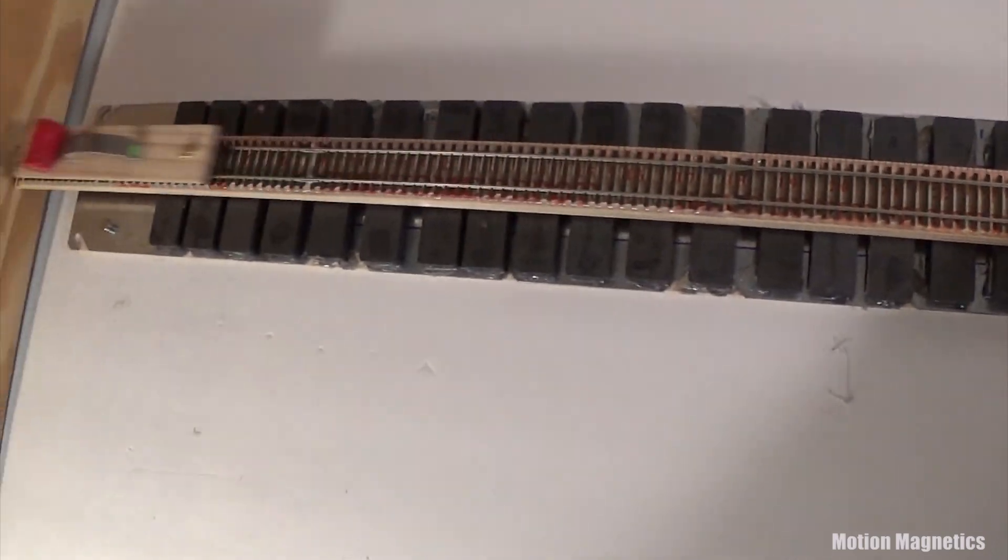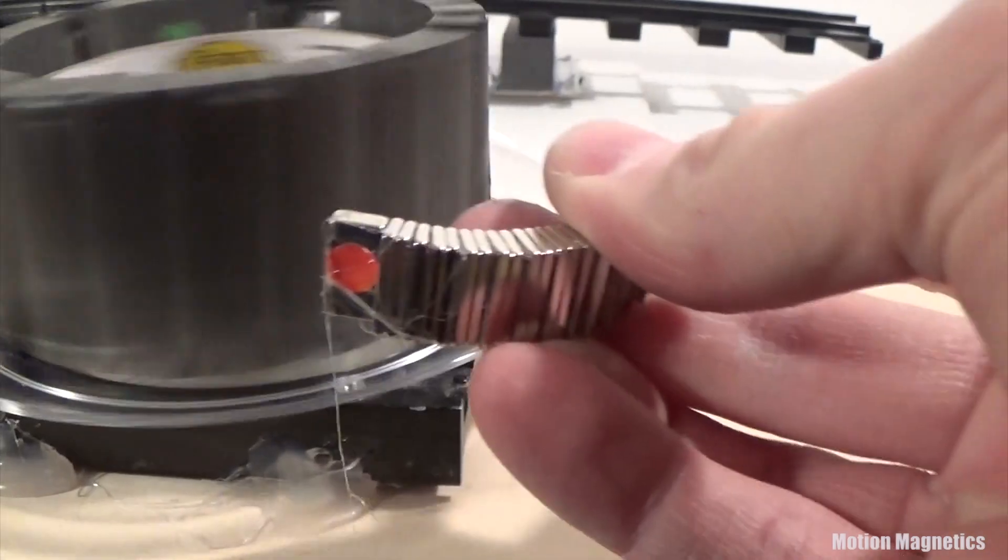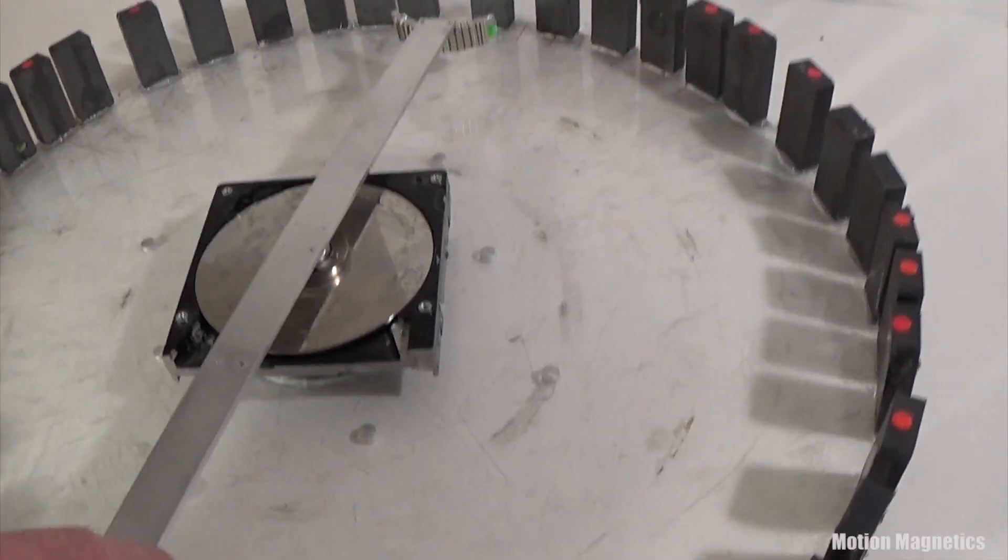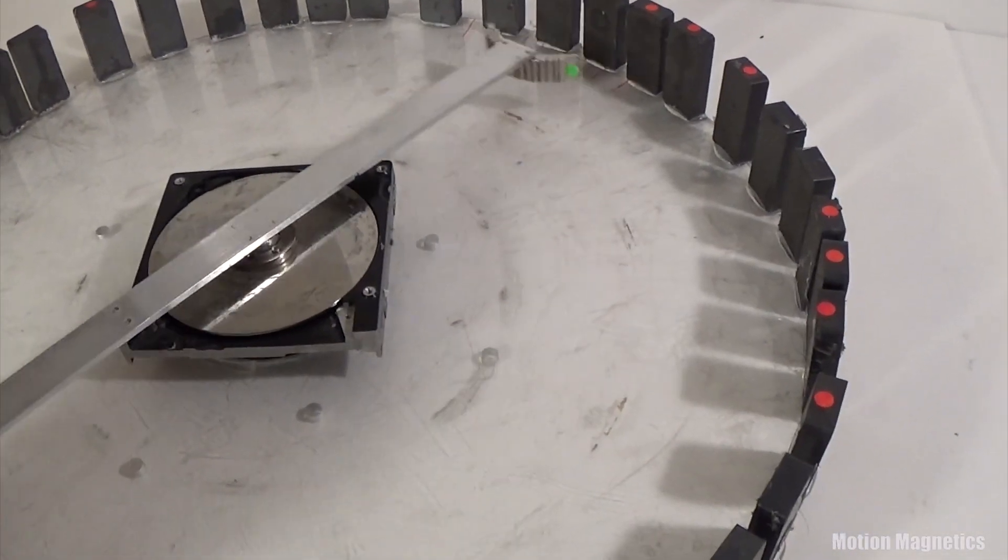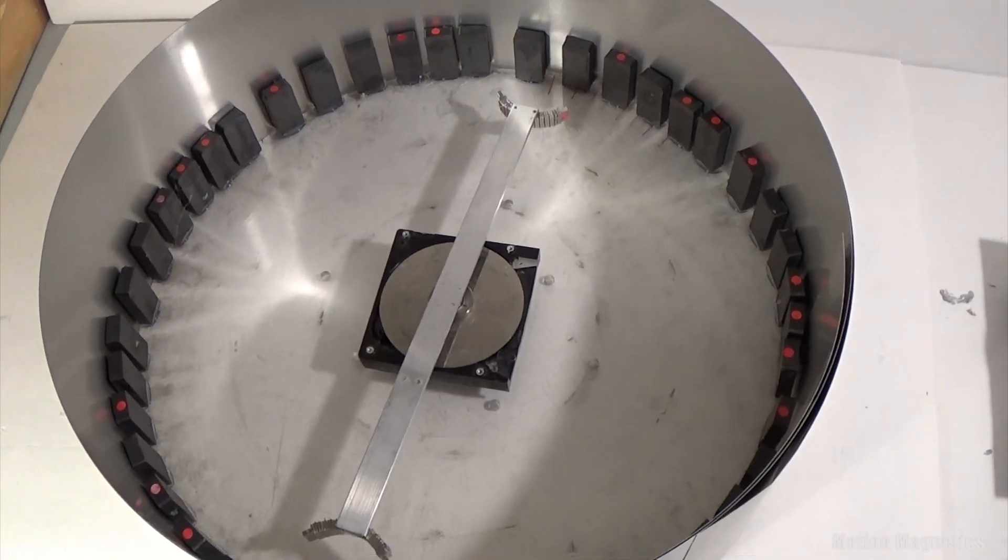By starting with a linear assembly, you exclude certain complex variables that you will have to compensate for in a rotary assembly. When you build a rotary assembly, you have to compensate for flux loops that are created by arcing an arrangement of magnets into a circle.